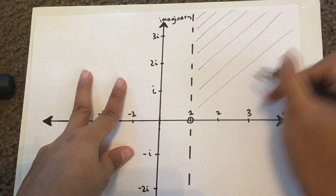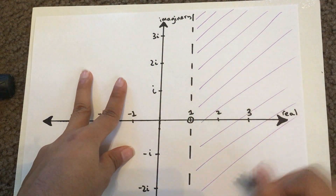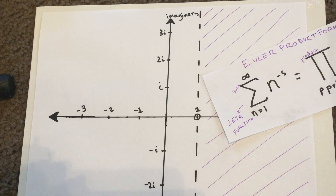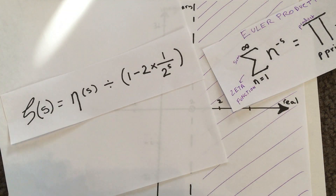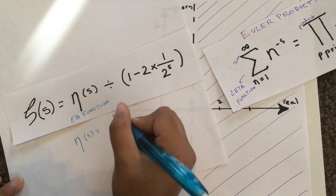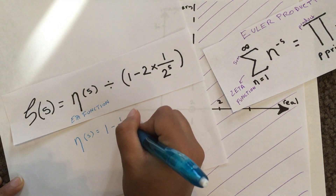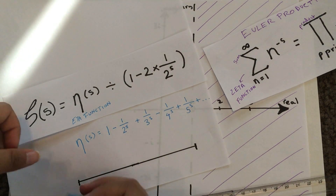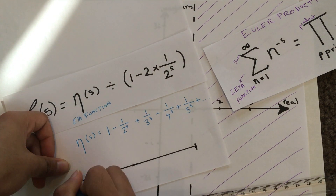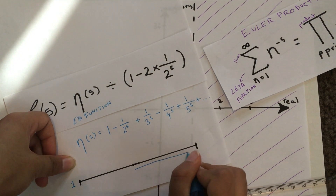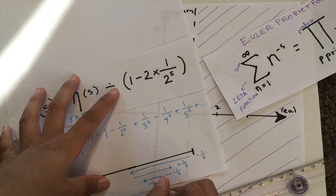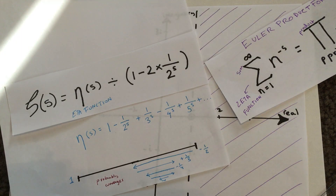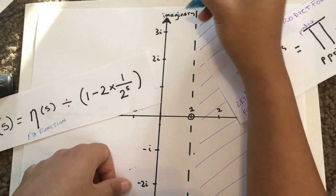So now, 1 is a singularity and the function is defined in this purple region. This next equation describes the zeta function in terms of another infinite function called the eta function. This function actually has a better chance of converging because of its alternating signs. So with this equation, we can define all the complex numbers with real part between 0 and 1.